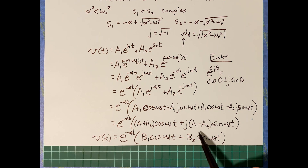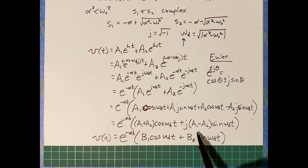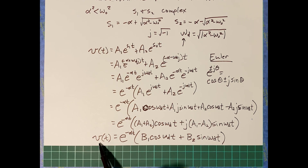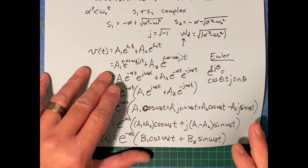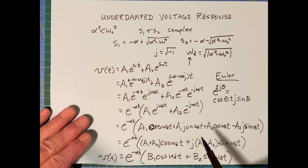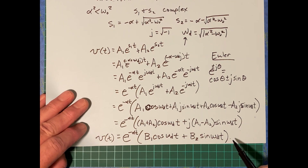You may be wondering about J times (A1 minus A2) — that is actually a real number, even though it's not obvious. It makes sense because the voltage itself is a real physical entity, so the voltage function has to be real. Therefore B1 and B2 are going to be real numbers. If you determine that alpha squared is less than omega naught squared, this is the general solution you start with.